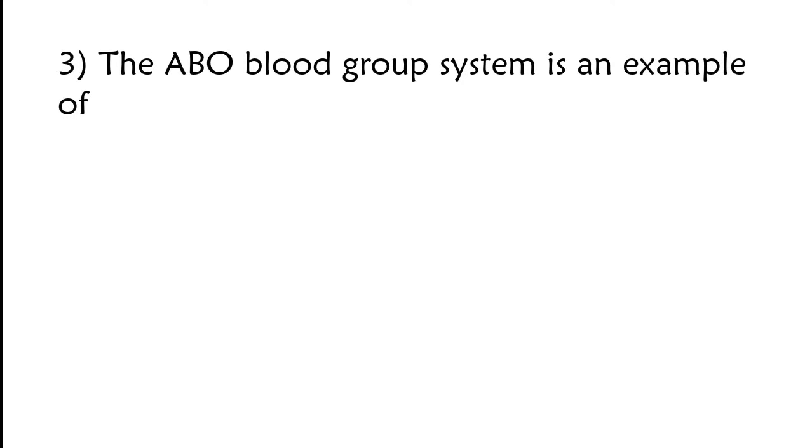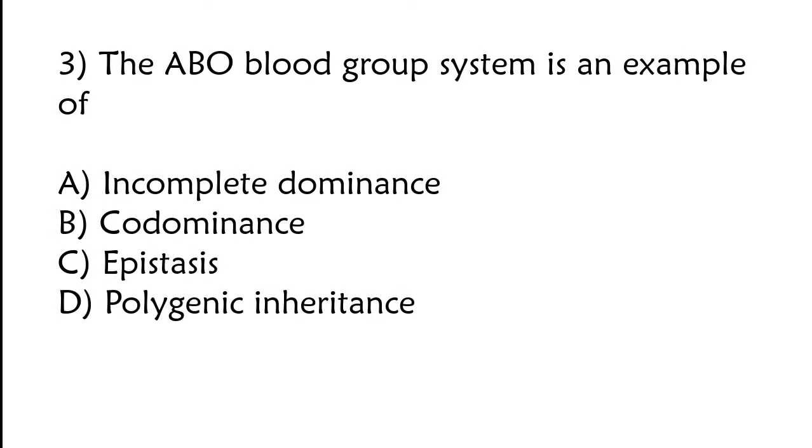The ABO blood group system is an example of: incomplete dominance, codominance, epistasis, or polygenic inheritance. The correct answer is option B, codominance.